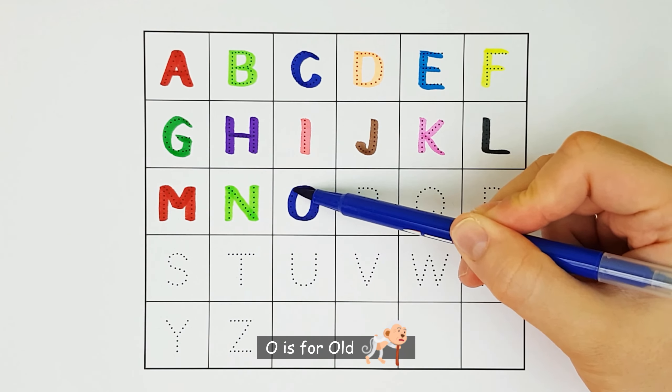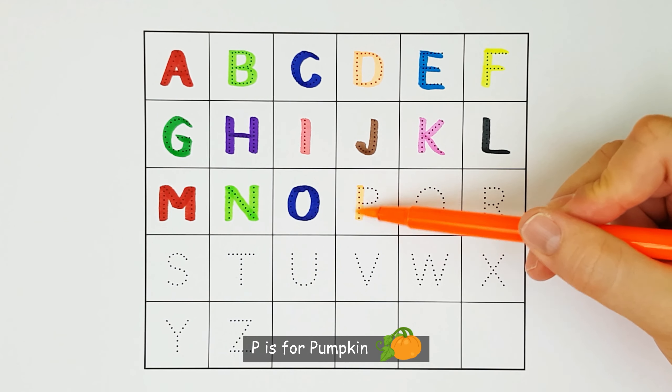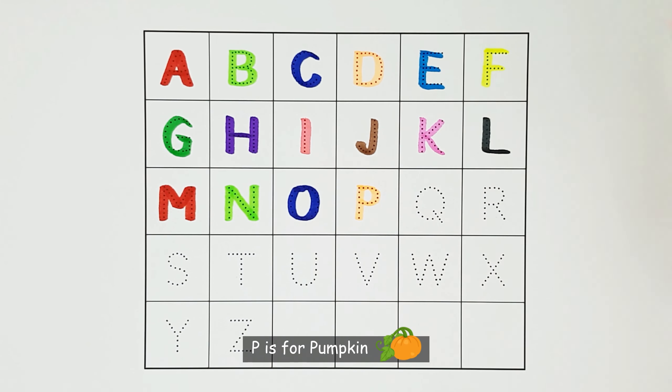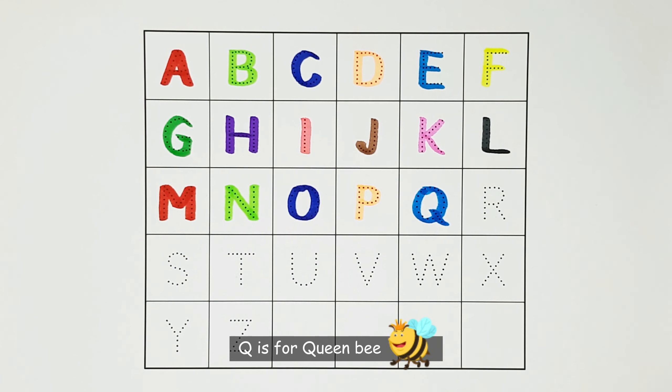O. O is for owl. O. O. P. P is for pumpkin. P. Q. Q is for queen bee. Q.